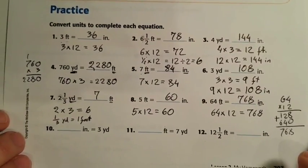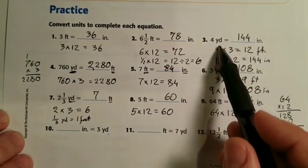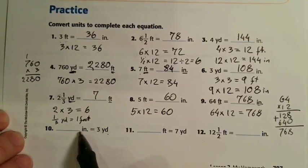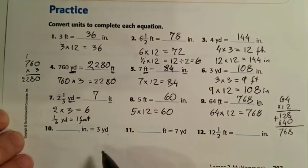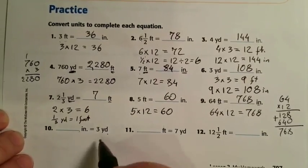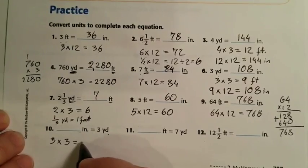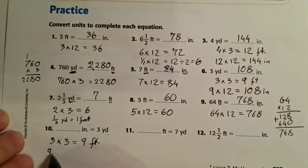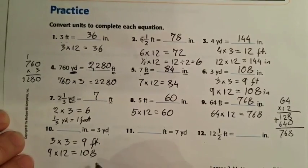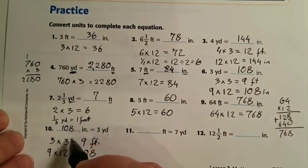Number ten is phrased the other way around but don't be confused — it's asking how many inches is three yards, which is the same type of problem. We convert yards to feet by multiplying by 3: 3 yards is 9 feet. Then feet to inches, multiply by 12: 9 times 12 is 108. So 108 inches equals three yards.